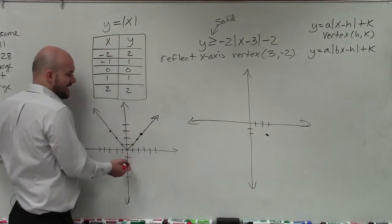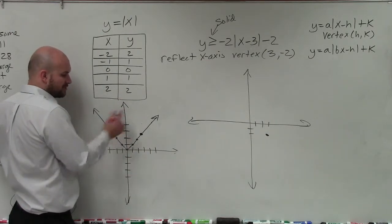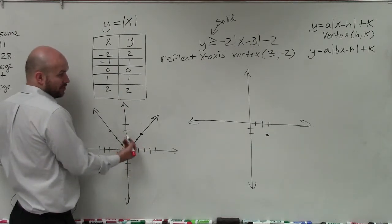Now, what's nice about the absolute value function is it's reflexive over your line. It has a line of symmetry, which is reflexive over that vertex, which the vertex goes through your line of symmetry.